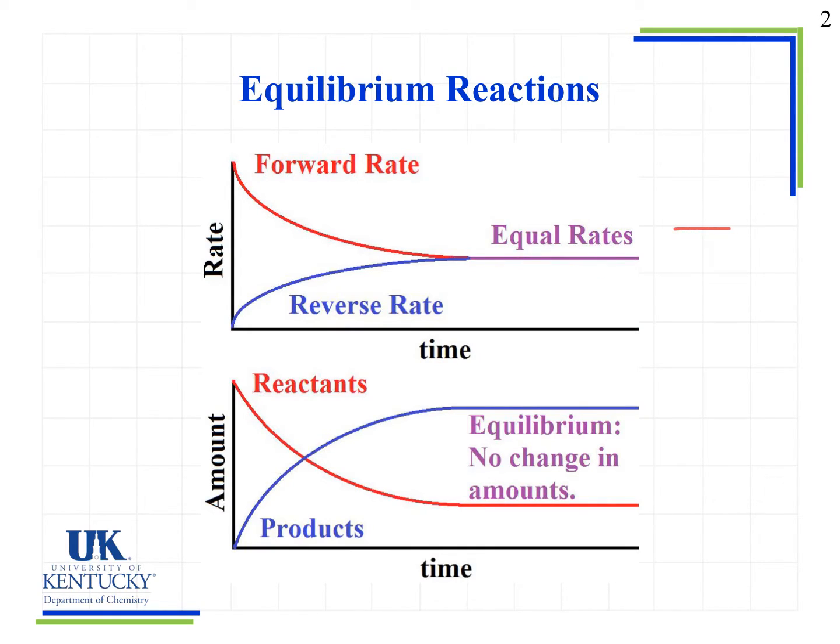Remember that when we looked at our weak electrolytes, we talked about having an equilibrium arrow, and what that means is that the reaction is actually proceeding in both directions. So we have A going to B and B going to A, and there's some relative amount of each of those present in solution.